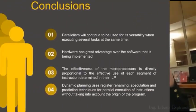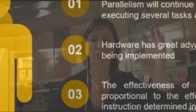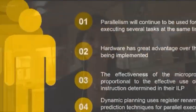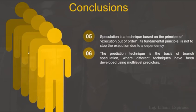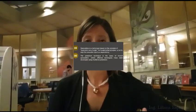These are the conclusions of the research. Parallelism will continue in the future. Hardware has great advantages over software, and we need to improve the way we write software in order to take advantage of the tools that hardware is bringing us today. Dynamic planning uses register renaming. The techniques that are more widely used nowadays are the dynamic and speculative ones — even when they can make more mistakes, the results show greater improvements in performance. Speculation, as the word implies, is when we execute instructions out of order.